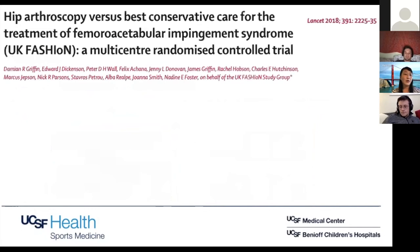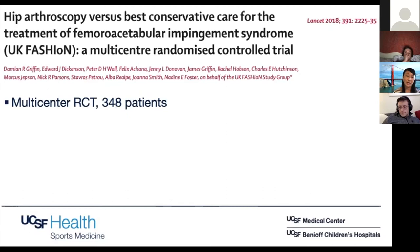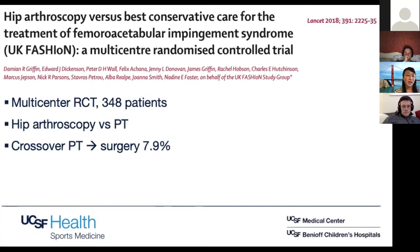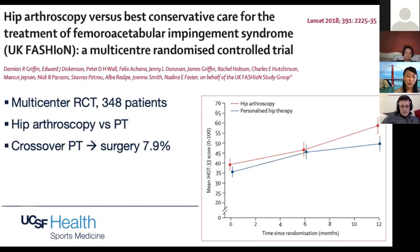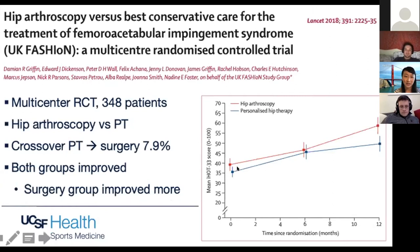How do patients do with non-operative treatment? This was a multi-center randomized control trial done in the UK called the UK FASHION trial. They looked at 348 patients randomized to hip arthroscopy versus physical therapy, with a pretty low crossover rate of about 8% crossing from PT to surgery. Over 12 months from randomization, both groups improved over time — hip arthroscopy is the top line in red, personalized hip therapy is the blue line below. Both improved significantly, but at one year the surgery group did improve more.